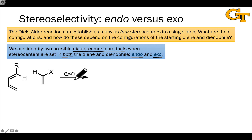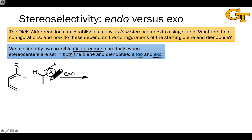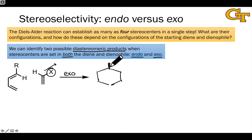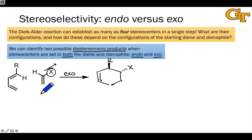The exo product occurs when the dienophile substituent is relatively far from the diene as the dienophile approaches the diene. In the case shown here, the exo substituent is relatively far from the diene, and the resulting structure has a trans relationship between R and X, which we'll visualize in a future video. What we can do, however, to generate a different arrangement of the dienophile with respect to the diene is flip it over.